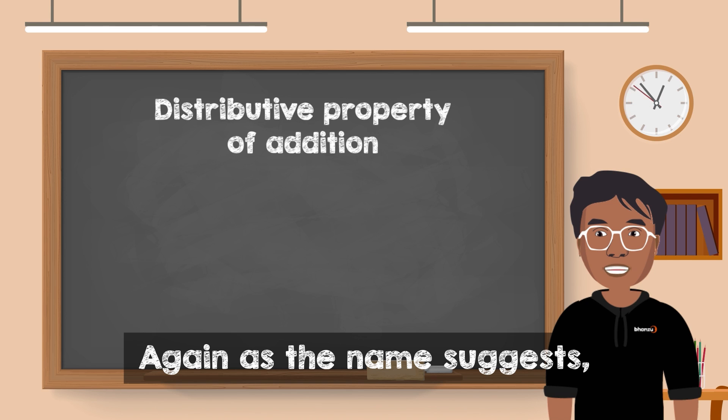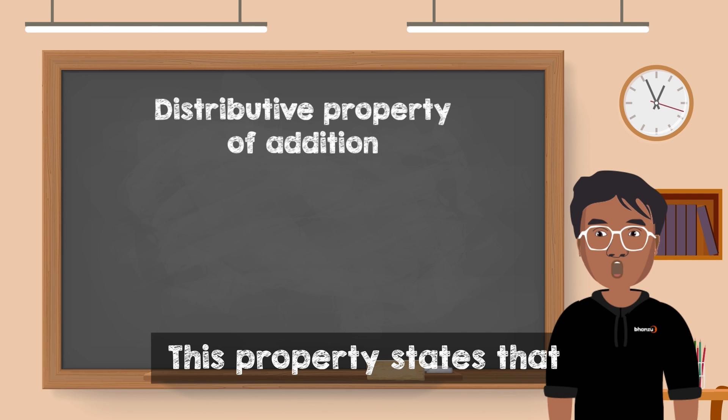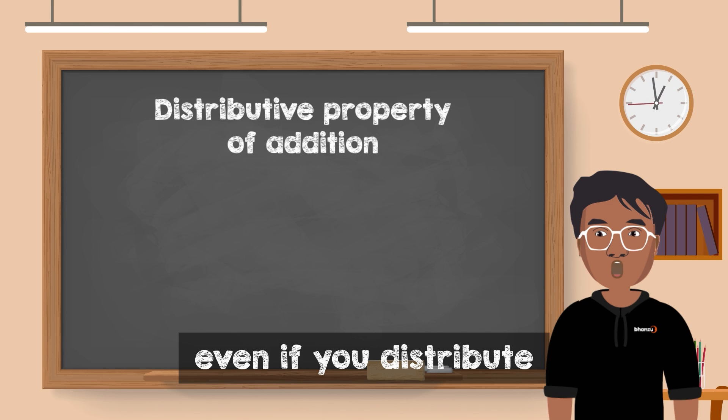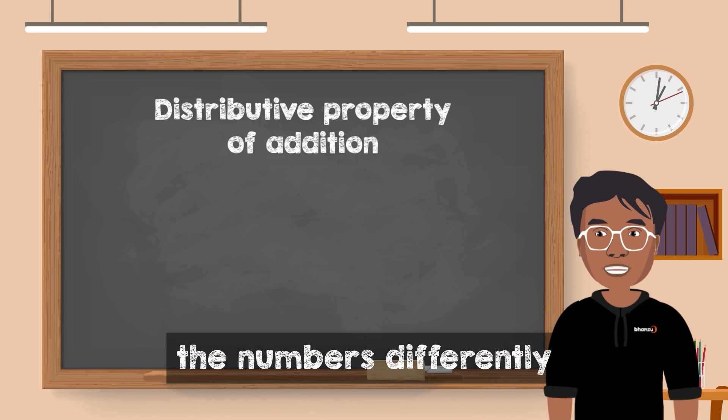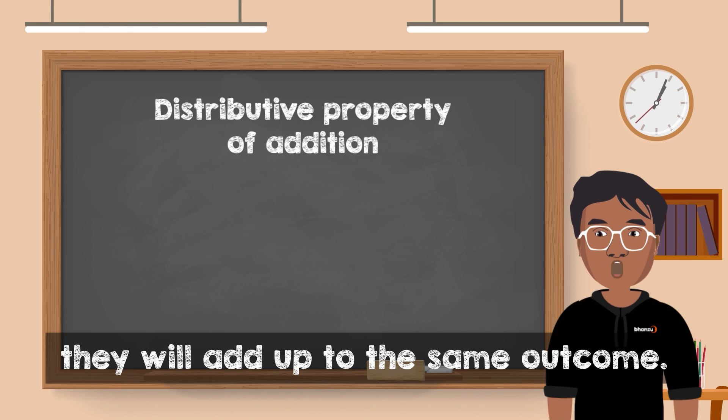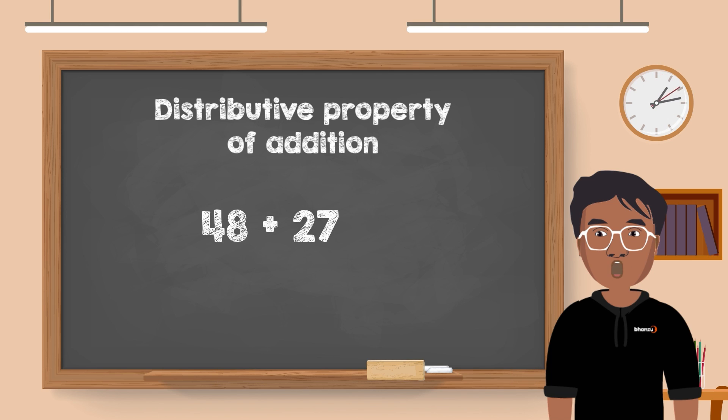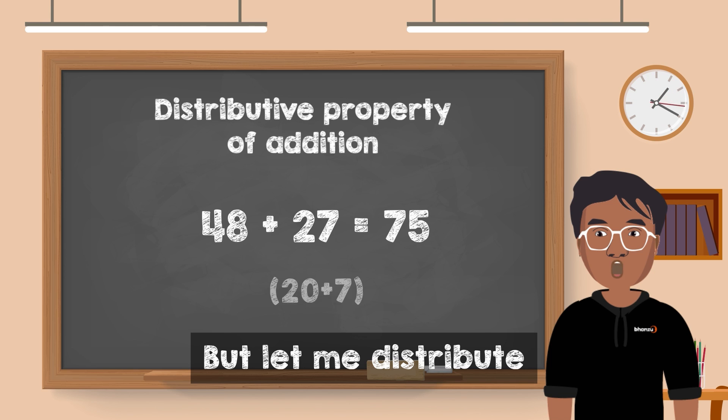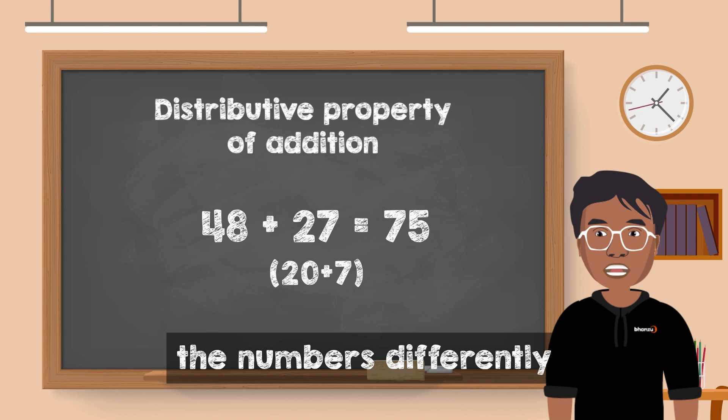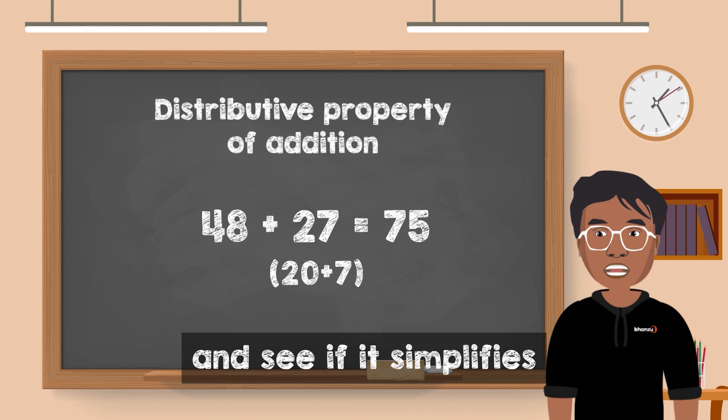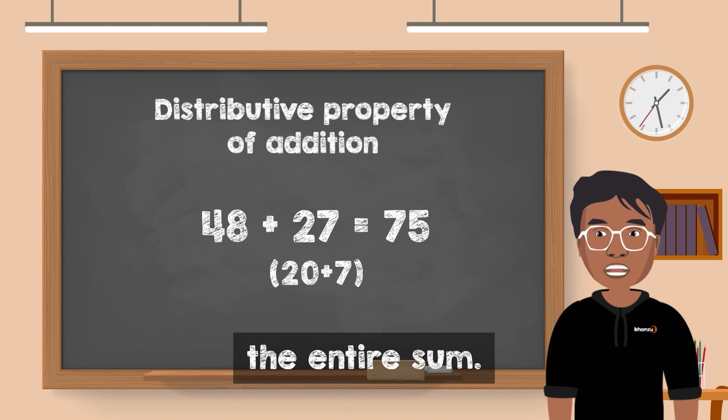Again, as the name suggests, this property states that even if you distribute the numbers differently, they will add up to the same outcome. Let's understand this with an example. Take 48 plus 27. This sum equals 75. But let me distribute the numbers differently and see if it simplifies the entire sum.